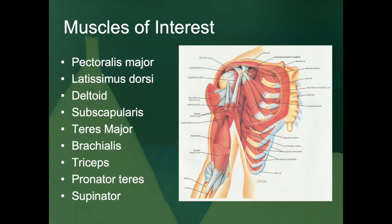There are nine muscles associated with movement of the arm across the shoulder joint. Two are associated with the thorax, two are axial muscles, and then we have the scapular muscles. Three major muscles are associated with the upper portion of the arm. Starting with the two connected to the thorax: the pectoralis major is an important muscle to associate with the humerus.